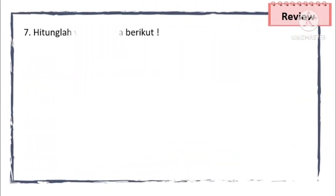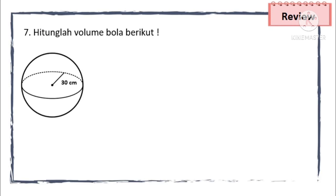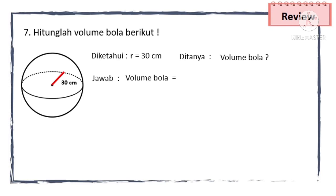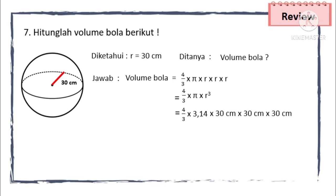Masih semangat ya? Kita lanjut nomor yang ke-7: hitunglah volume bola berikut. Ada gambar bola dengan jari-jarinya 30 cm. Ditanya volume bola. Maka kita jawab: volume bola = 4/3 × π × r³. Karena jari-jarinya 30 cm, maka kita memilih π = 3,14. Berarti 4/3 × 3,14 × 30 × 30 × 30 cm.